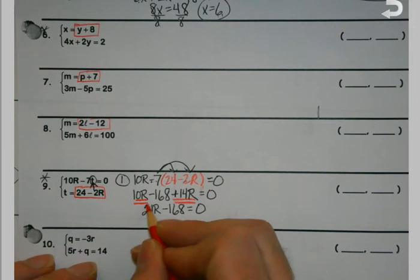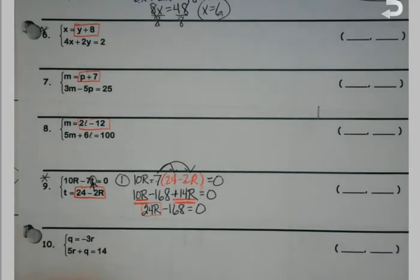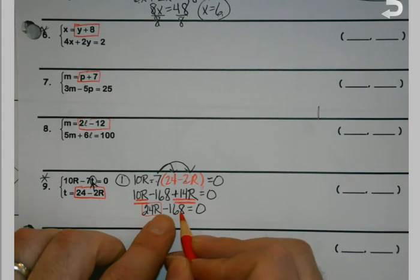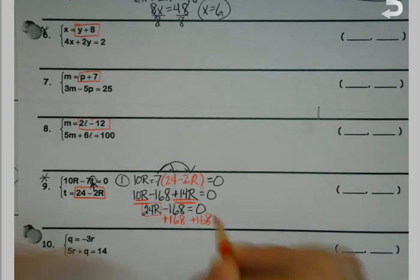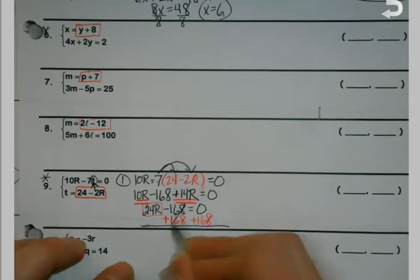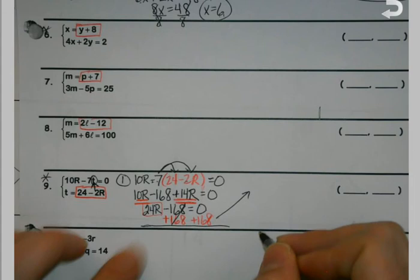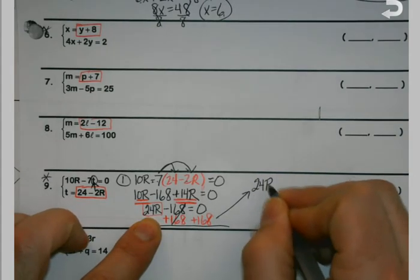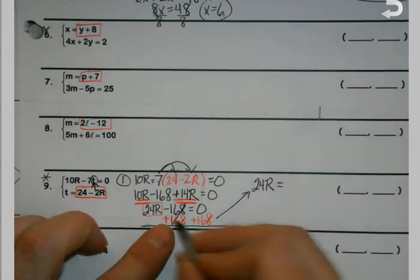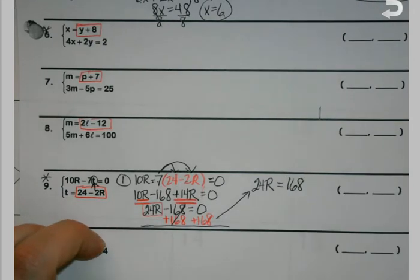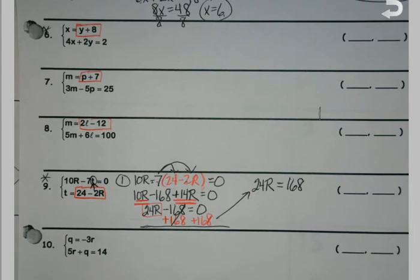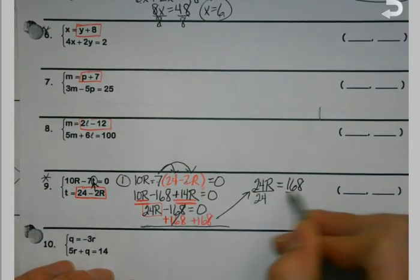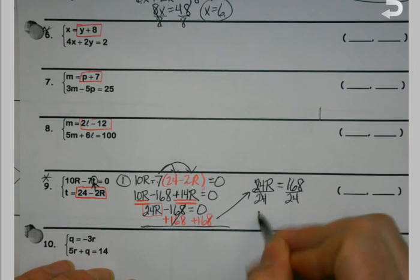And then my whole job again just becomes getting that r on the side by itself. I'm minusing 168 from it so I do the opposite. We always do the stuff that's furthest away from our variable. We get it out of there first. So 24r and the 168 over. Zero plus anything will just be the number so that's where the 168 is coming from.